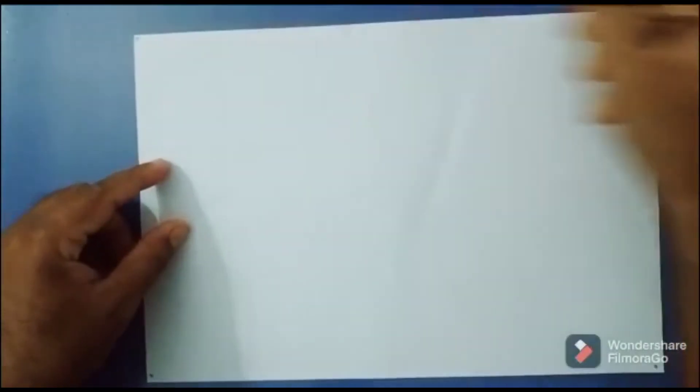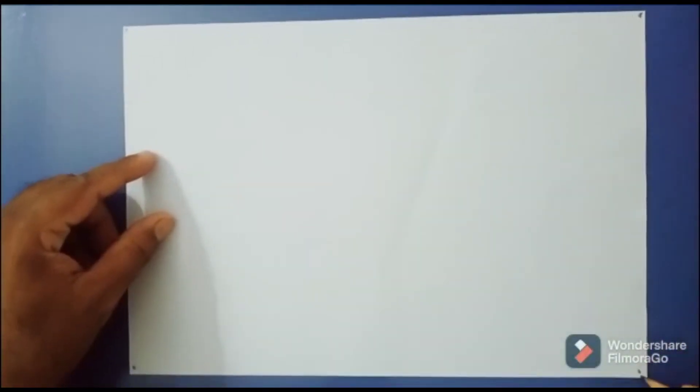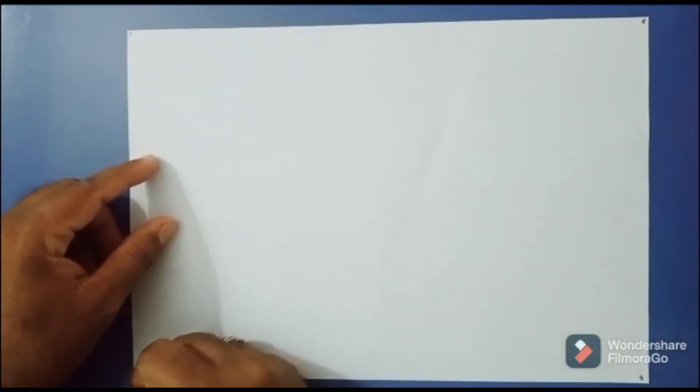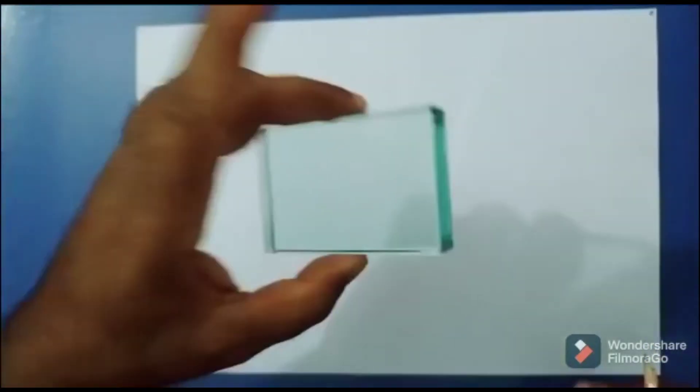Take a drawing sheet and place it over the table. Fix four pins to the four corners of this paper so that it does not move. Take a rectangular glass slab, place it in the middle of the paper, and draw the boundaries of this rectangular glass slab.